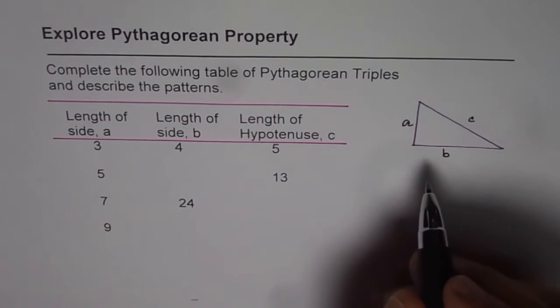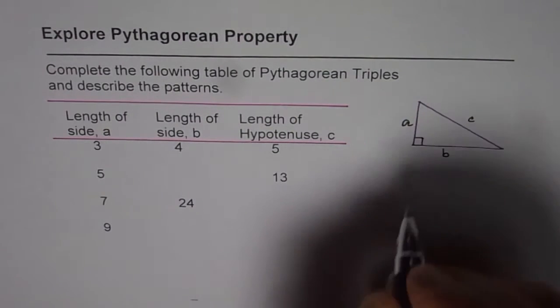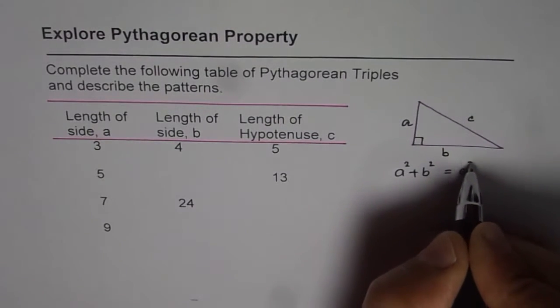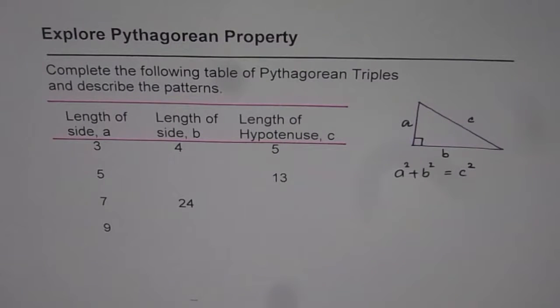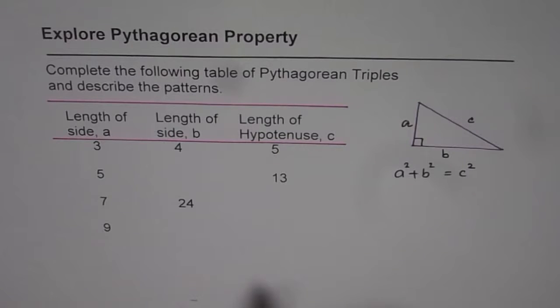As you know the relation between them is the Pythagorean property. So we have a square plus b square equals to c square. By filling up this table you will get a clue to find a, b and c so that they are sides of right triangle and they are whole numbers. Isn't that cool? Let us explore how.